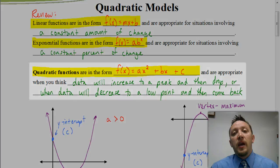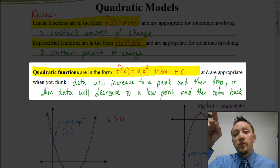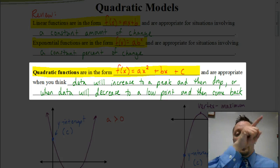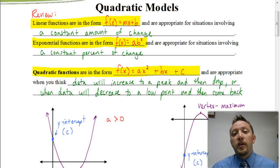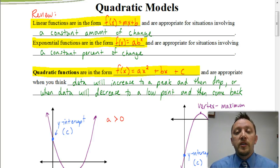In today's video, we're going to be looking at quadratic functions, which are in the form f of x equals ax squared plus bx plus c. These models are appropriate for situations where information increases to a peak and then comes back down, or dips to a lowest point and then comes back up. We'll look at some graphs to illustrate this, and then look at what we can pull out from the standard form ax squared plus bx plus c.